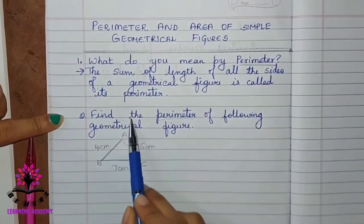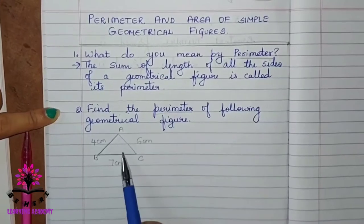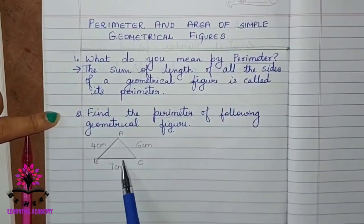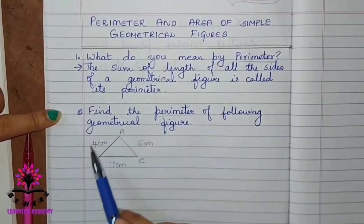Find the perimeter of the following geometrical figure. Geometrical figure is a triangle here. First, you have to write what is given in the figure.